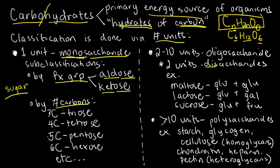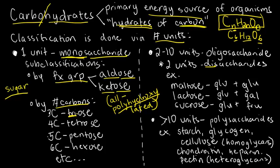Regardless of being an aldehyde or ketone, all monosaccharides are described as polyhydroxylated — meaning they have many hydroxy or OH groups. By the number of carbons, the naming is straightforward: triose is a three-carbon sugar, tetrose is a four-carbon sugar, pentose is a five-carbon sugar, and so on. We even have sugars with seven, eight, or nine carbons, though we will not discuss those in detail.